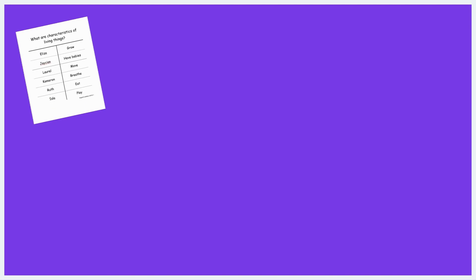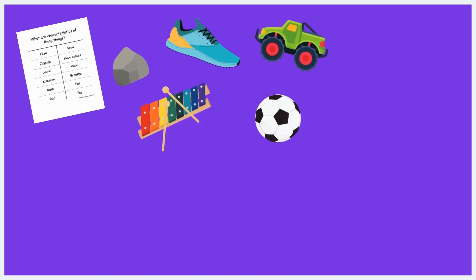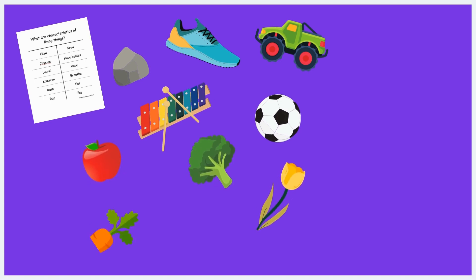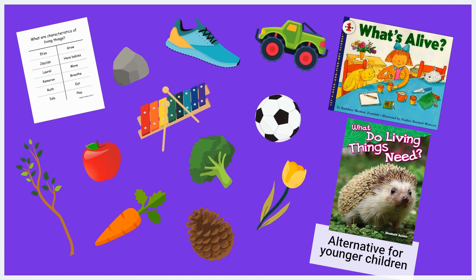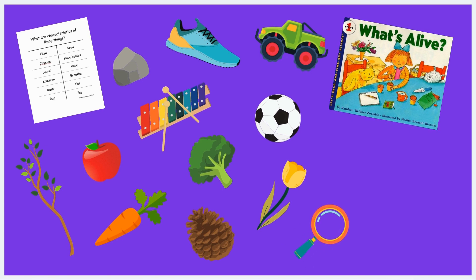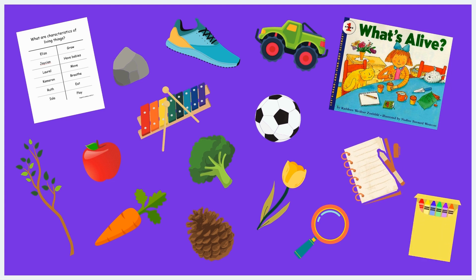For this activity, you will need the following materials: a documentation panel from Activity 1, a variety of nonliving things, a variety of once living now nonliving things, the book What's Alive by Kathleen Wiedner, magnifying glasses, science journals, and coloring and writing utensils.